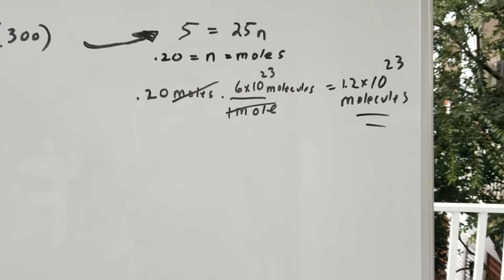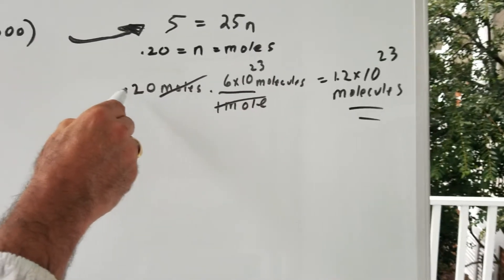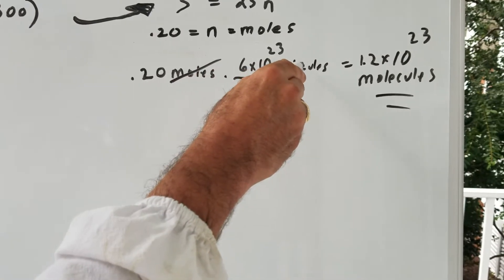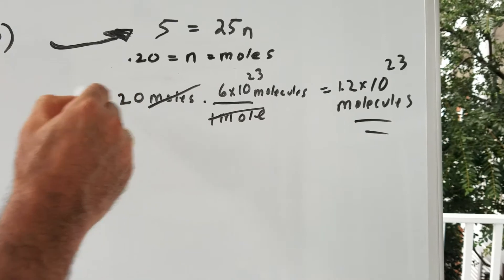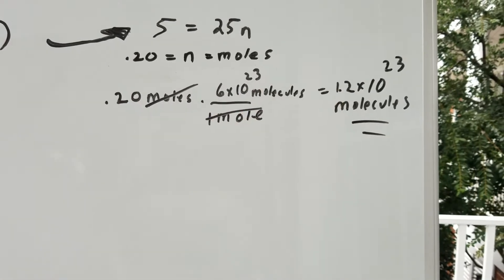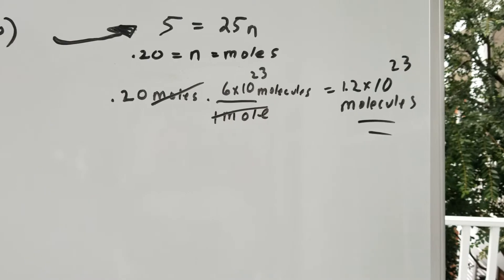But then you ask for the number of molecules. So all I did was write the 0.20 moles. There's 6 times 10^23 molecules in one mole. 6 times 10^23 times 0.2 gives me 1.2 times 10^23 molecules.